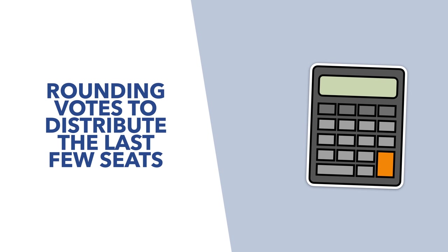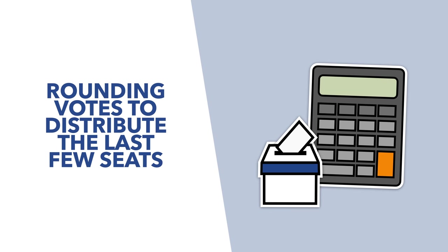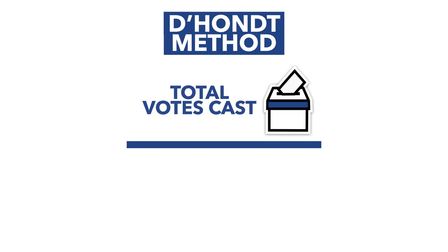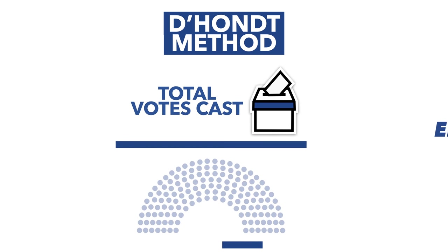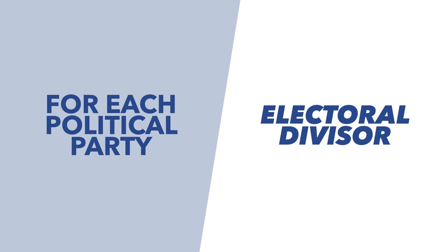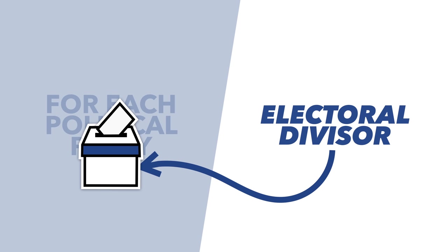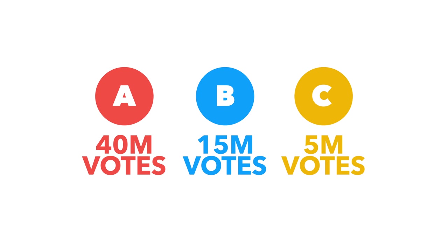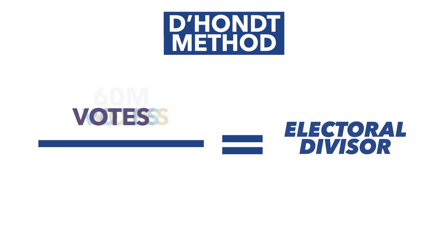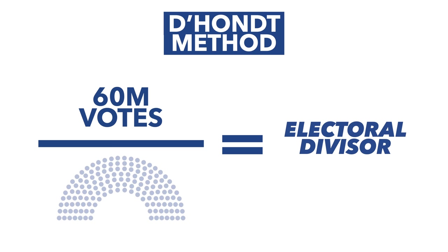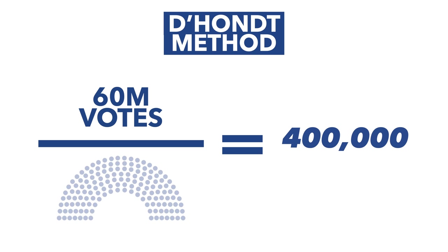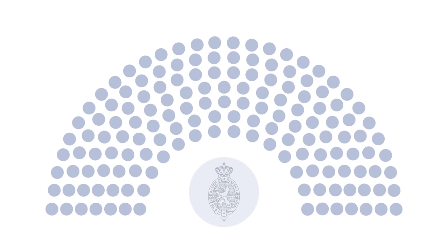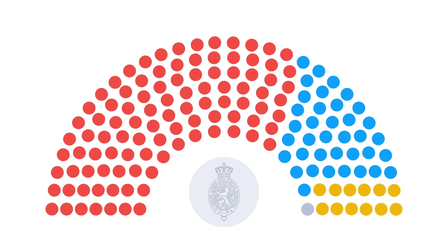Calculations can get a little tricky when it comes to rounding off the amount of votes received to distribute the last few seats. In the Netherlands, this issue is resolved by the so-called D'Hondt system. First, you divide the total number of votes cast by the number of available seats — the result is the electoral divisor. Then you count for each party how many times this electoral divisor fits fully into their total votes. So let's say party A got 40 million, B 15 million, and C 5 million. The electoral divisor is calculated by dividing the 60 million votes cast by the 150 available seats, which equals 400,000. All we have to do now is divide the number of votes each party got by 400,000 and always round down. Thus, party A will get 100 seats, B will get 37, and C will get 12.